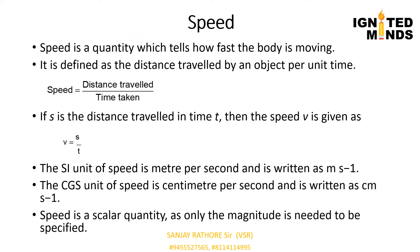Speed is a quantity which tells how fast a body is moving. Mathematically, it is defined as the distance travelled by an object per unit time. Speed is equal to distance travelled divided by time taken. If S is the distance travelled in time T, then velocity V is equal to S divided by T.